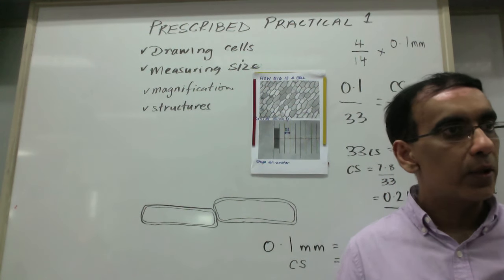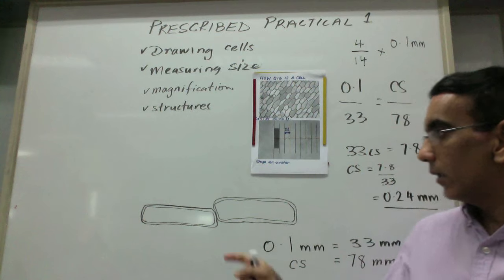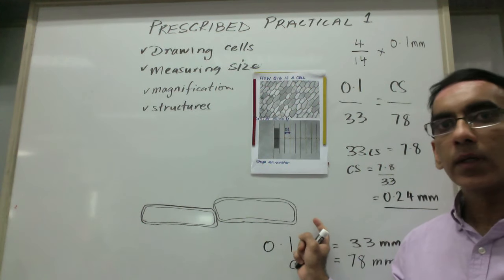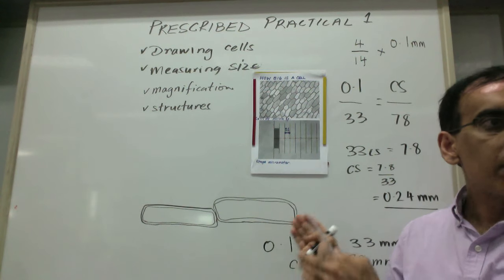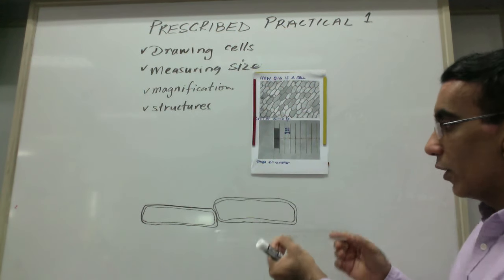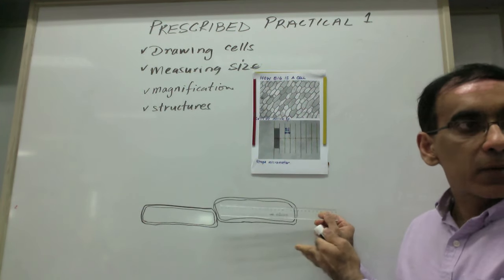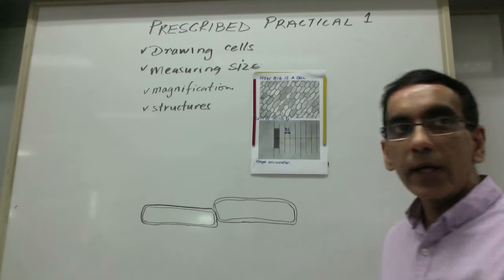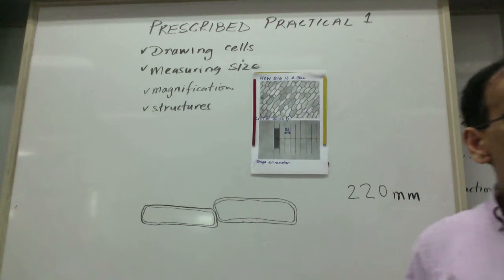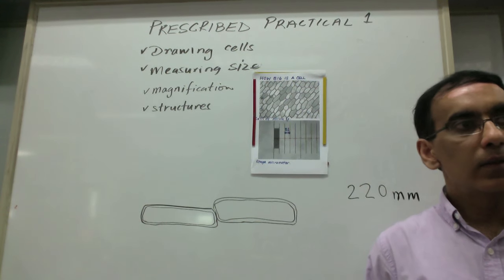The magnification of a specimen drawn by pencil in your notebook, like these cells that I drew here, how would I determine the magnification of this? How much is it bigger than the actual specimen? You have to measure the actual size of the specimen, which is 220 millimeters.